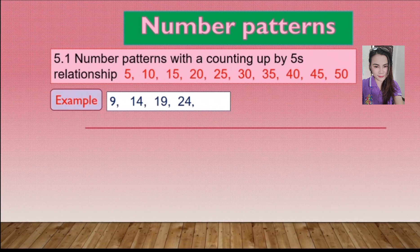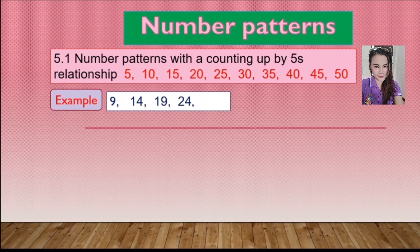Let us do together. Nine, and: ten, eleven, twelve, thirteen, fourteen. So nine plus five equals fourteen. Or we can say nine counted up by five equals fourteen. And next, from fourteen counted up by five equals nineteen. That is correct.